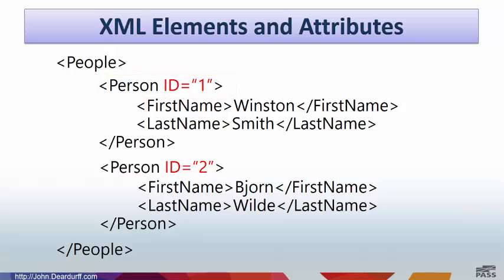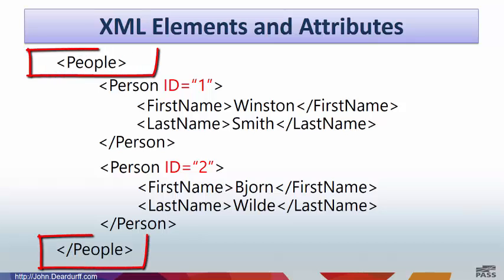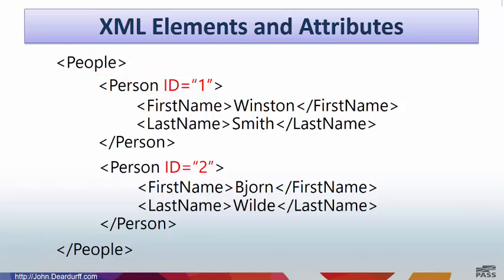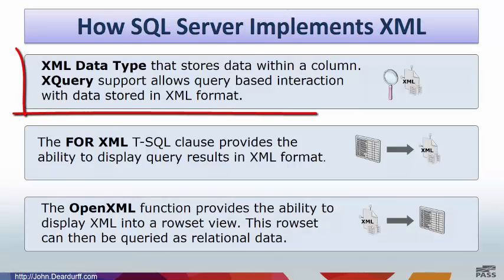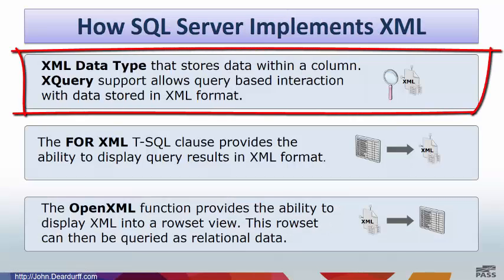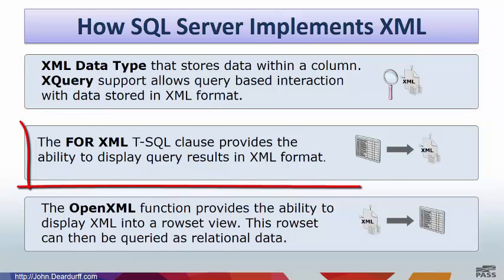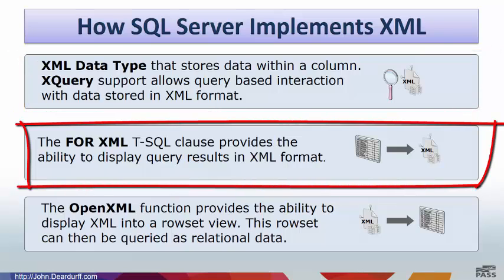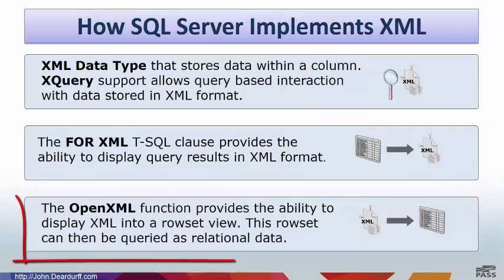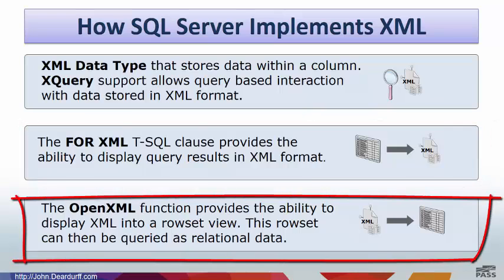A well-formed document will have a root element that defines all the objects on that page. In this case, the people element is our root element. Now, SQL Server will implement XML in one of three ways: either as an XML data type to store data in a column within a table, to display relational data as XML using the FOR XML statement, or converting XML data into tabular data by using the OPENXML function.